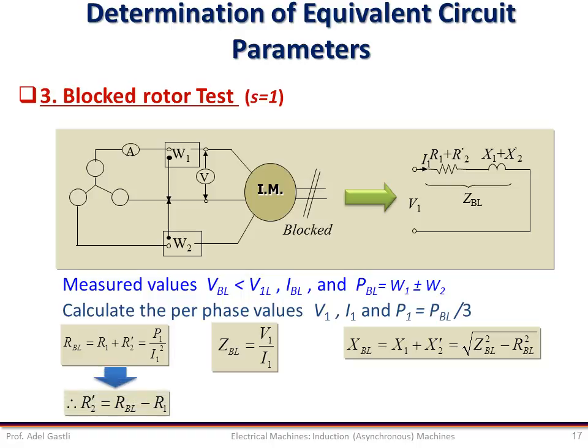From the calculated value of R_bl, we can deduce R'2 = R_bl − R1, where R1 is the stator resistance measured with the DC test. We know X1 + X'2 = X_bl, but we don't know them individually, so we assume X1 = X'2 = X_bl/2. Finally, we calculate XM as X_NL minus the value of X1 just calculated from the blocked rotor test.